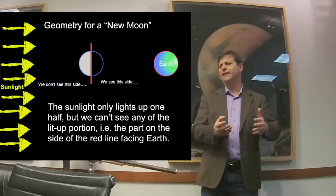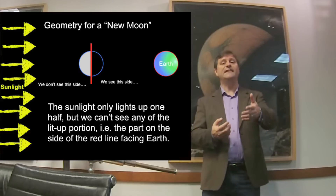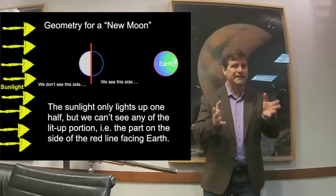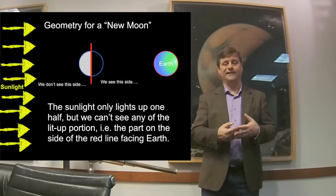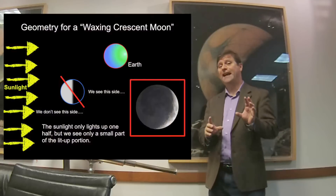A new Moon is actually a Moon that you can't see, which is kind of a funny thing to think about. The new Moon is the phase when the Moon is in the same direction as the Sun in the sky. So if it's roughly in the same direction, you're not going to see the Moon in the sky — that's called a new Moon. The first time you see the Moon is at what we call waxing crescent.